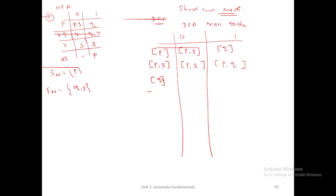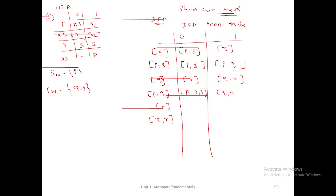This is the new DFA state, so I write it here. Then for state [q]: it is a single state, the answer is already available — write it directly. This is a new DFA state, so write it here. Don't forget to write these states in this notation. Then refer p,q with input 0: p,0 is {p,s} and q,0 is r. Written in alphabetical order, the answer is {p,r,s}. Then combine p,1 and q,1: the answer is {q,r}.